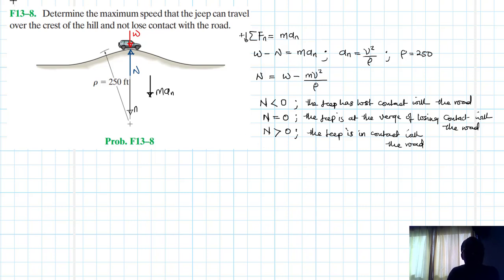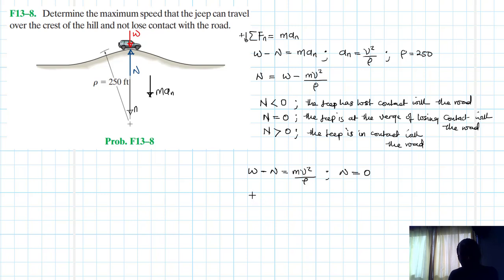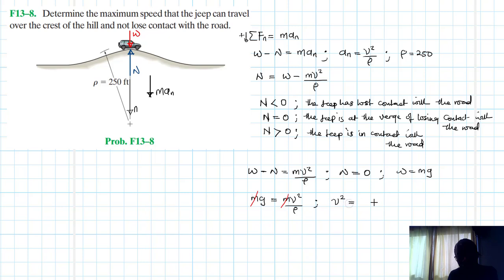In the equation, we set N equal to zero. So we have W minus N equals m·v² divided by ρ, with N equal to zero this gives W equals m·v² divided by ρ. Since W equals mg, we get mg equals m·v² divided by ρ. We can cancel m from both sides, giving v² equals g·ρ.